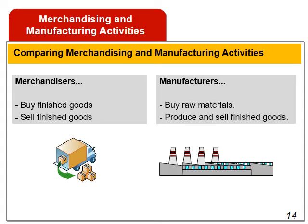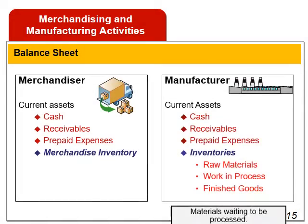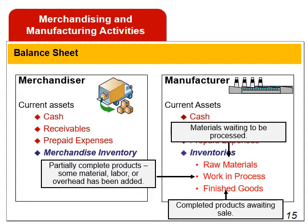We will now compare merchandising companies and manufacturing companies. Merchandising companies purchase finished goods from suppliers for resale to customers, while manufacturing companies purchase raw materials from suppliers and produce and sell finished goods to customers. On the balance sheet, both types of companies will likely have cash, receivables, and prepaid expenses. However, merchandising companies report one inventory number labeled merchandise inventory, while manufacturing companies report three types: raw materials, work in process, and finished goods. Work in process consists of units of product that are partially complete but will require further work before they are saleable to customers.